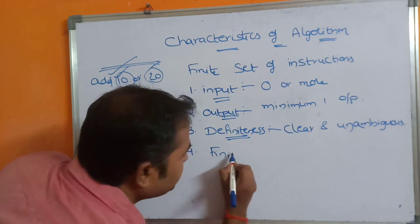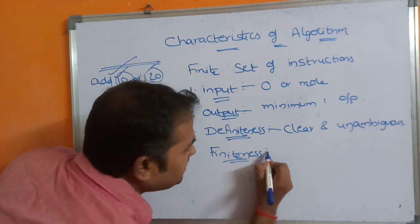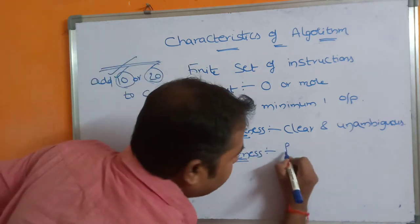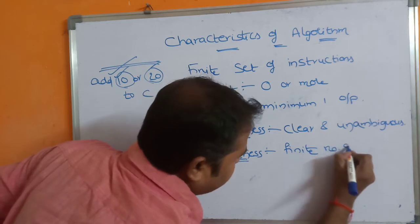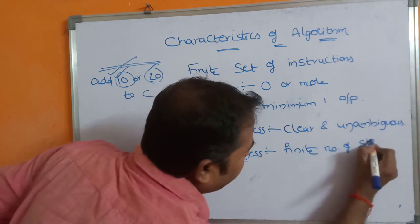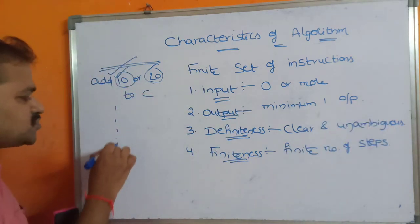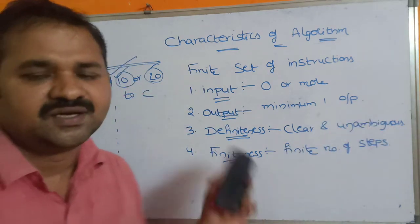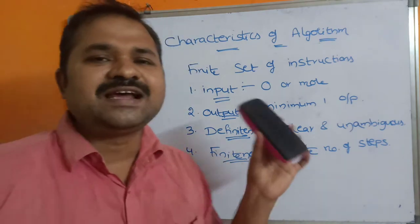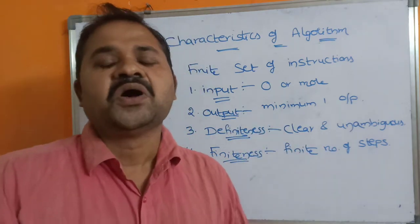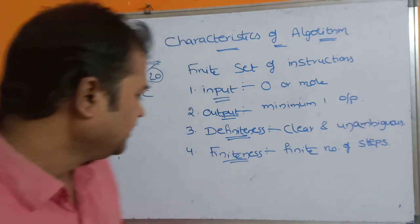The next property is finiteness. Finiteness means an algorithm must contain a finite number of steps — it should not contain infinite number of steps. The algorithm must be terminated after a countable number of steps.